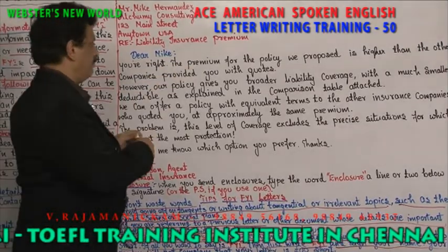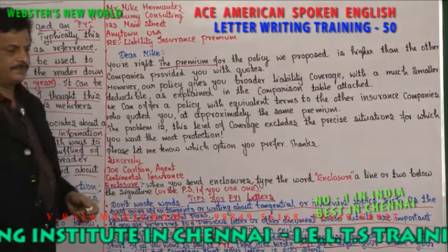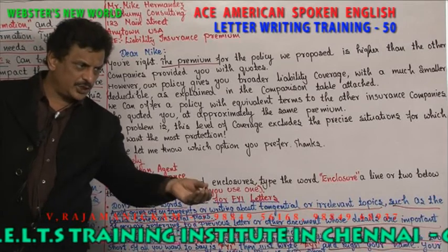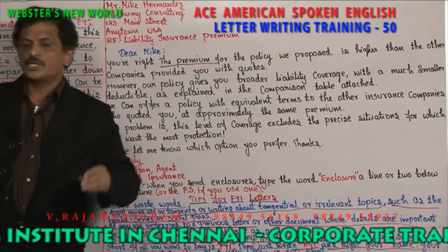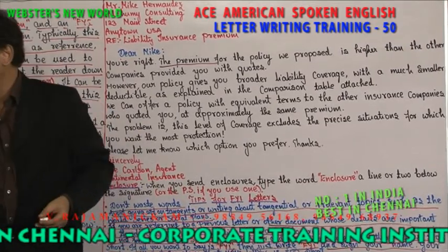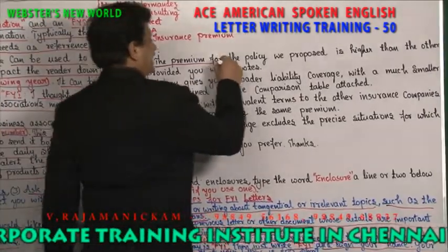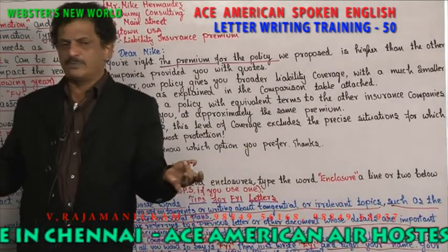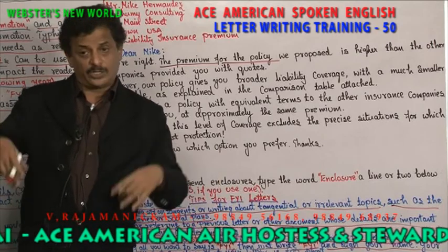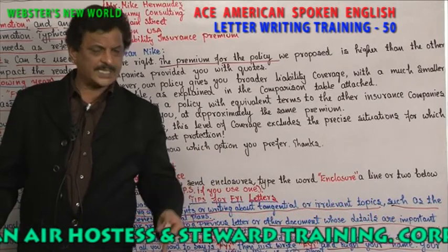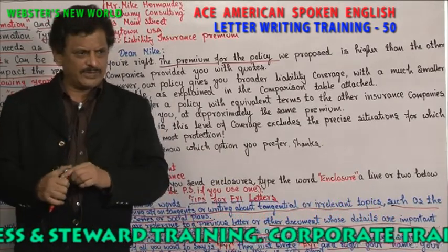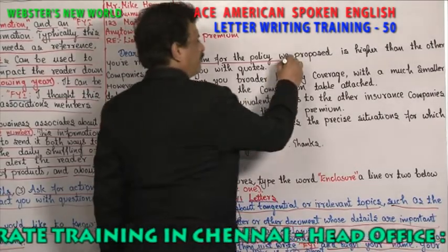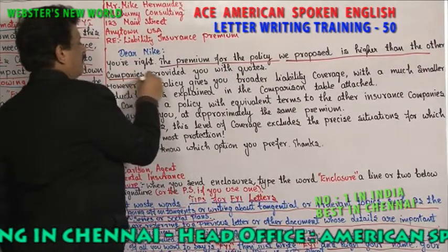The premium for the policy we proposed is higher than the other companies provided you with quotes. What do you mean by premium? For insurance, you pay an amount yearly — for example, if you take 5 lakhs as life insurance, you pay 20,000 or 30,000 rupees yearly; that amount is the premium. The premium for the policy we proposed is higher than the other companies provided you with quotes.